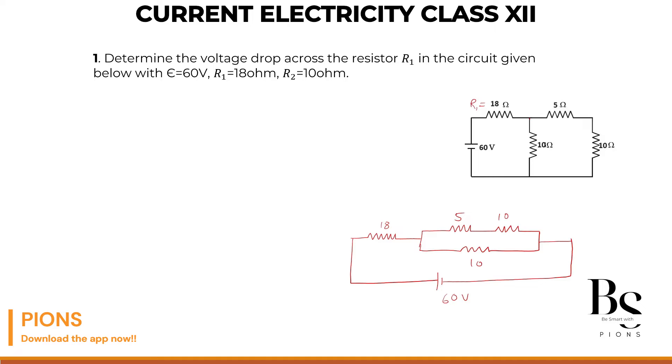We know this 5 ohm and 10 ohm are in series. So what will be the equivalent? The equivalent of 5 and 10 is 15. So let's make it here as 15 ohms. Now this 15 ohm and this 10 ohm are in parallel. So let's find the equivalent.